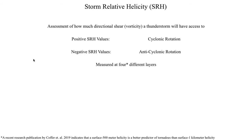Storm relative helicity is typically measured at four different layers. It used to be measured at three different layers, but a very recent research publication — there will be a link in the description below — published just last year introduced a new layer in the atmosphere being used to assess tornado potential, which we're going to discuss during this segment.